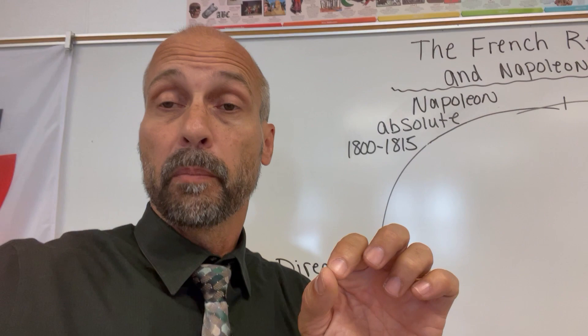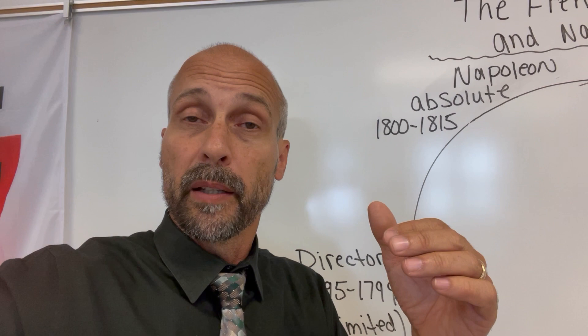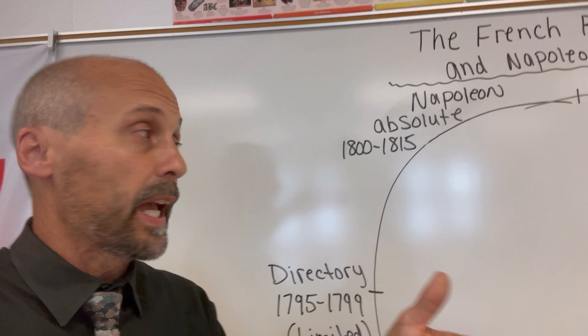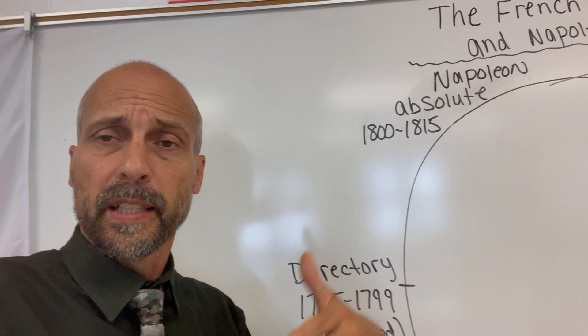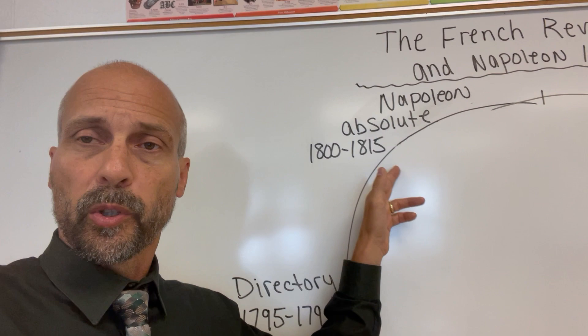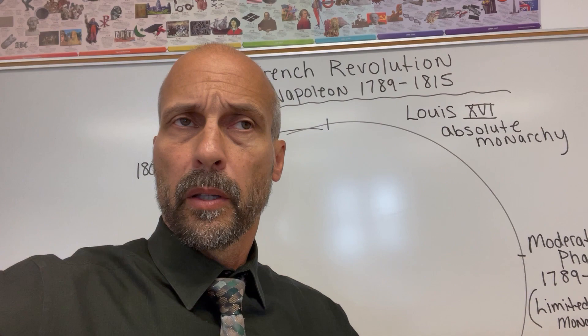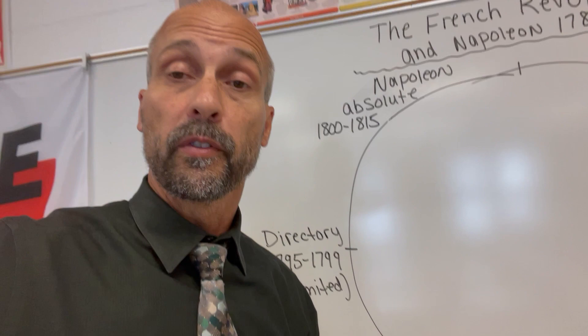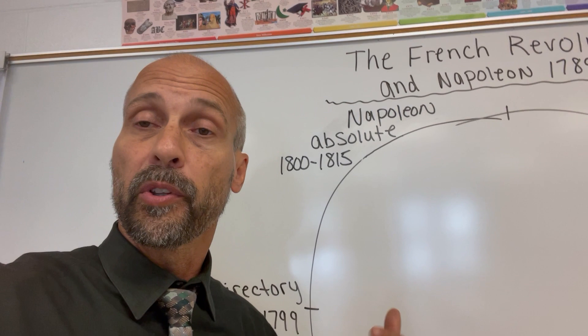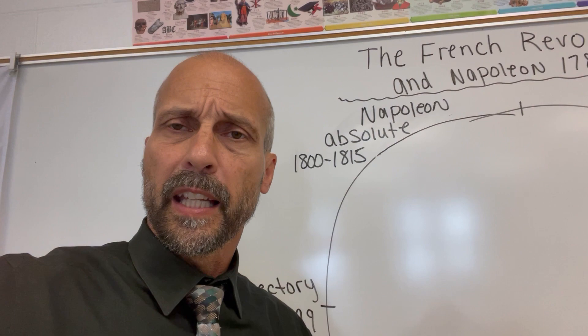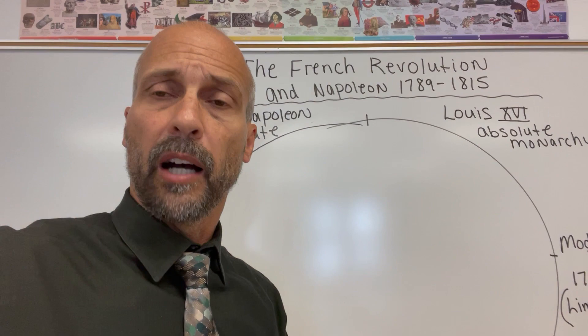In 1799 a very significant person comes on the scene — Napoleon. He participates in a coup, an overthrow of the government in 1799, and they're successful. From 1800 to 1815 Napoleon is the leader of France; he declares himself emperor and is an absolute ruler. So what's very interesting about the French Revolution is that it starts with an absolute form of government under Louis the 16th, goes to a limited form during the moderate phase, moves to a republic during the radical phase, moves back to a limited form during the Directory, and then ends up back with an absolute form of government with Napoleon.